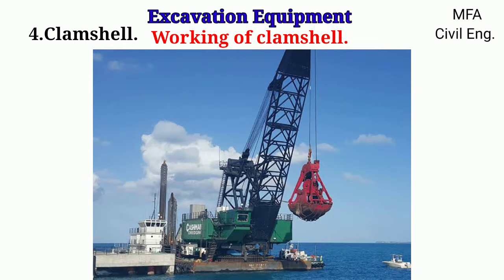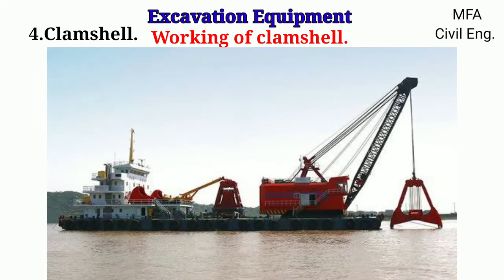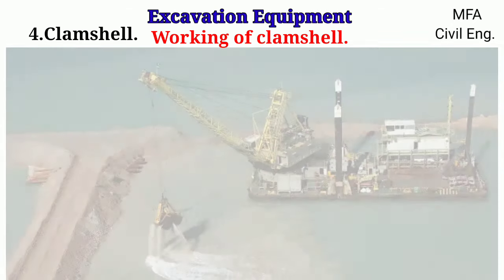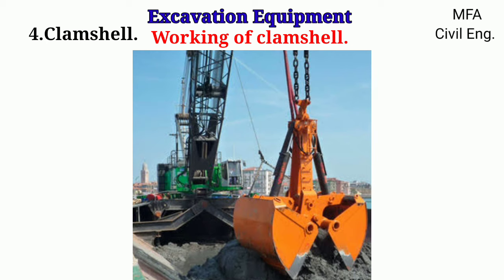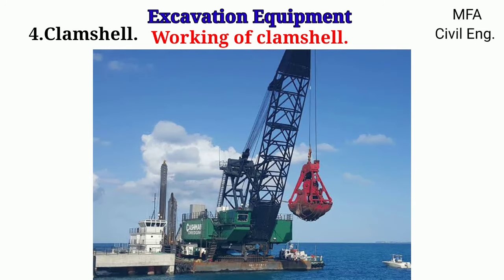The working operation of the clamshell is such that the bucket is brought over the location where the material is to be dug. The bucket is lowered with the shells open until good contact is made with the ground. The buckets are then closed through the closing line. As the two shells close, the weight of the bucket enables it to dig into the material, filling the bucket. It is then hoisted and swung to the dumping position, the earth is dumped, and the boom swings back to repeat the cycle.